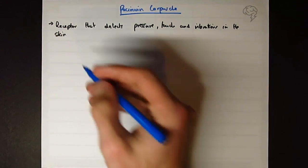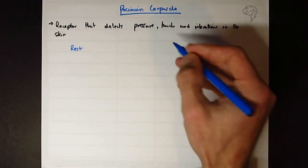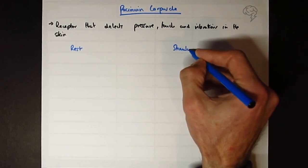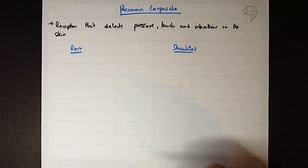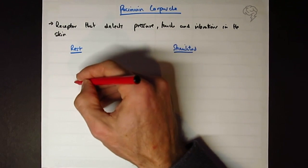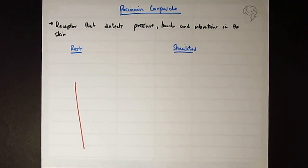We're going to look at one that's at rest and one that's being stimulated. So first of all, what's going on normally, I'm going to draw a receptor which is going to connect to a sensory neuron, so let's put my sensory neuron in.